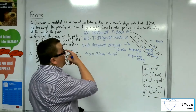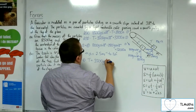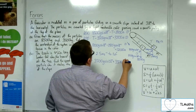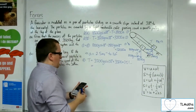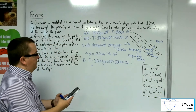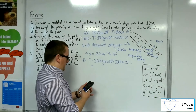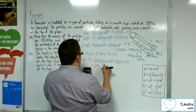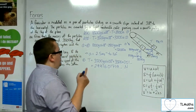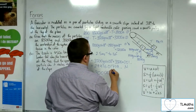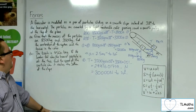Substituting the acceleration back into equation 2: T equals 3,500G sine 38 plus 3,500 times 2.51. Multiplying out and adding 3,500 × 9.8 × sine 38 gives 29,916 newtons. So to two significant figures, that's 30,000 newtons.